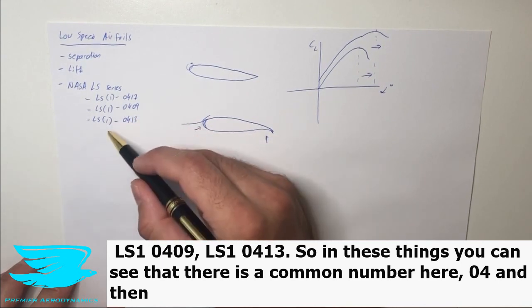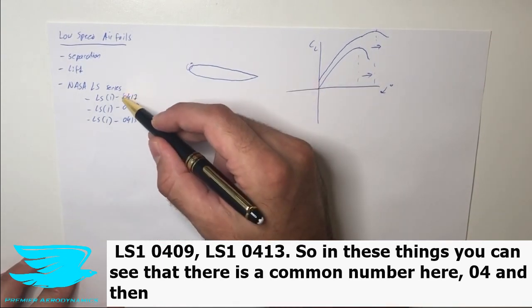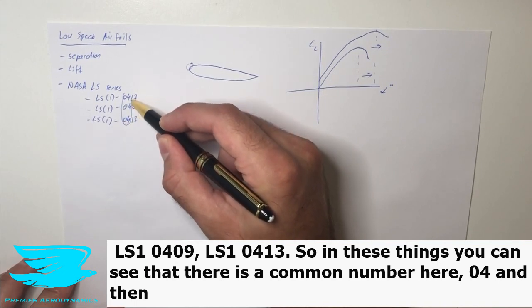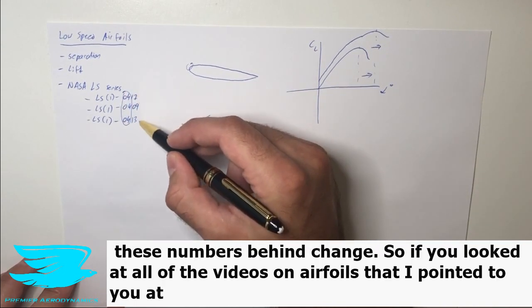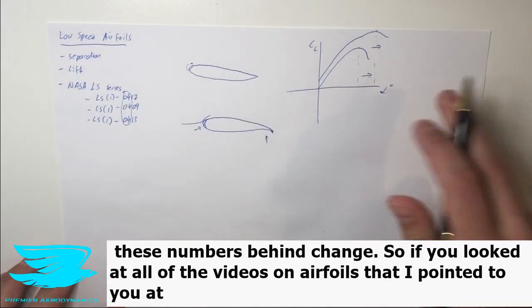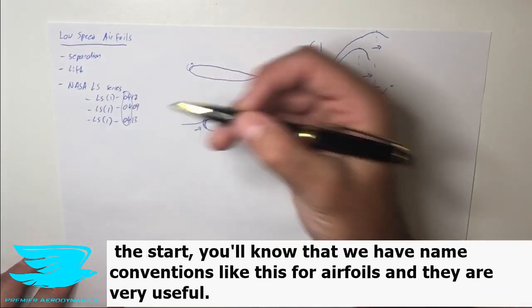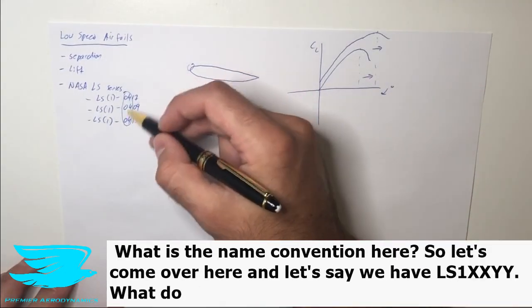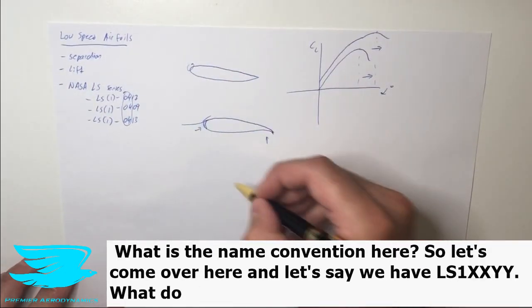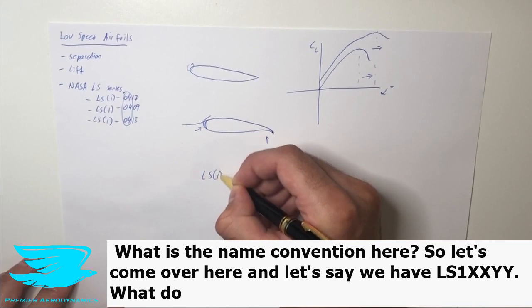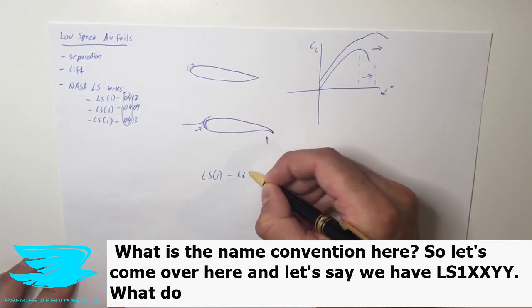LS1-0409, LS1-0413. So in these things you can see that there is a common number here: 04, and then these numbers behind change. So if you looked at our other video on airfoils that I pointed to at the start, you'll know that we have naming conventions like this for airfoils and they're very useful. What is the naming convention here? So let's come over here and let's say we have LS1 XX YY. What do the X's stand for and what do the Y's stand for?